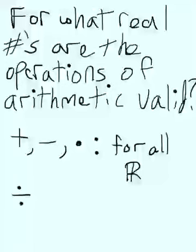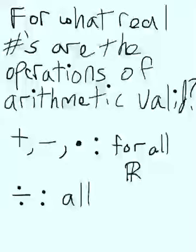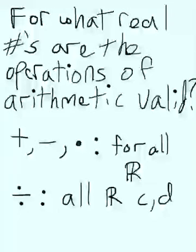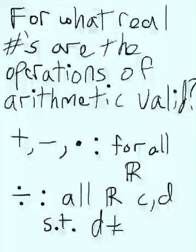And then we come to our good old buddy, division. Can we divide any two real numbers we want and get a real number? As long as the number we're dividing by isn't zero, we're okay. But if the number we're dividing by is zero, then we can't. So this is true for all real numbers C and D, such that D is not equal to zero.